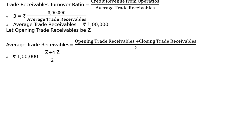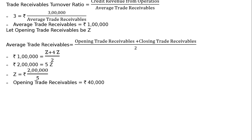Z plus 4Z by 2 implies ₹2 lakh equals 5Z, so Z equals ₹2 lakh divided by 5. Therefore opening trade receivable is ₹40,000. Closing trade receivable is 4Z, which is 4 multiplied by ₹40,000, equaling ₹1,60,000.